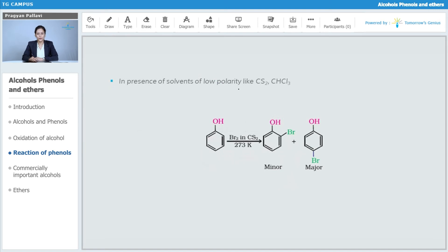In the presence of solvents of low polarity such as CS2, if we are using bromine in presence of CS2, it is going to give this ortho brominated product which is minor and the para bromo product is the major product.